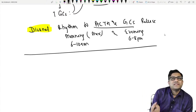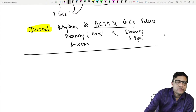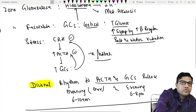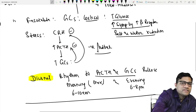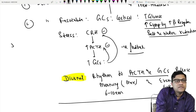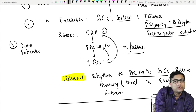Glucocorticoids fight stress by increasing glucose and increasing sympathetic activity. There is also a diurnal rhythm — cortisol and ACTH are released at peak times: morning 6 to 10 AM and evening 6 to 8 PM. This diurnal rhythm is disturbed in disease states.